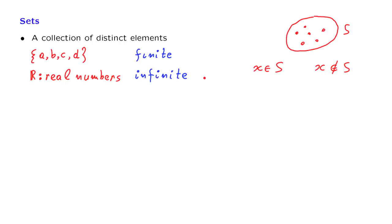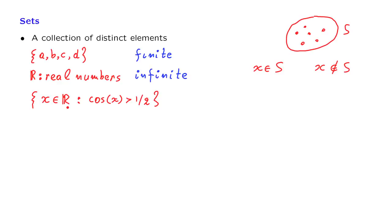One way of specifying sets is as follows. We start with a bigger set — for example, the set of real numbers — and we consider all those x's that belong to that big set that have a certain property; for example, that the cosine of this number is bigger than one half. This is a way of specifying a set: we start with a big set but restrict to those elements that satisfy a particular property.